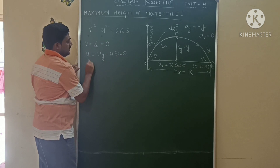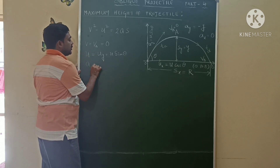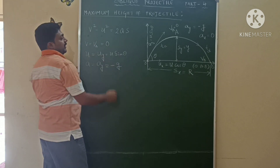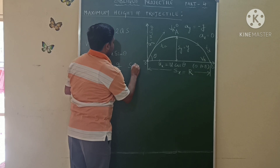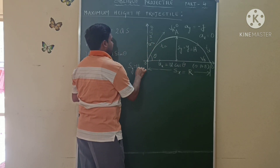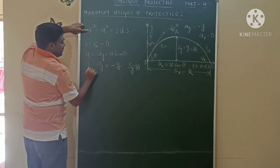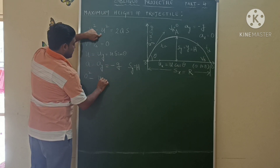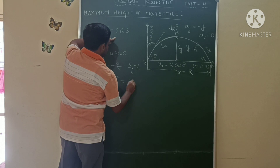The acceleration a, acting from the starting point, is due to gravity, so a equals aᵧ, which is −g. The displacement is the maximum vertical displacement along the y-axis, represented as H. From the equation: 0² − (u sinθ)² = 2 × (−g) × H.